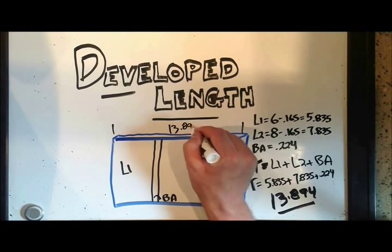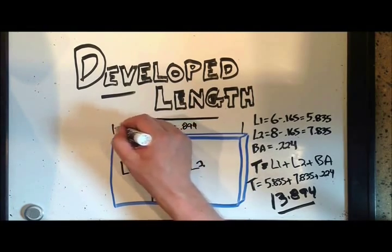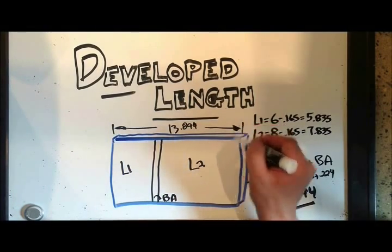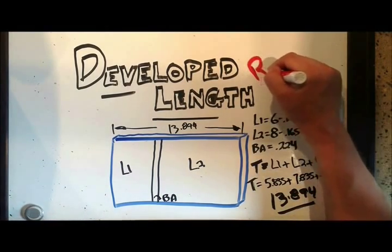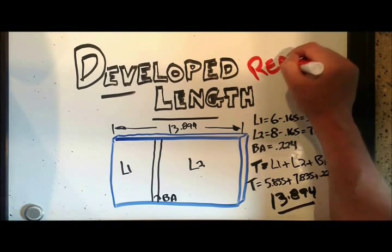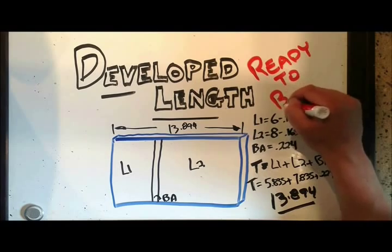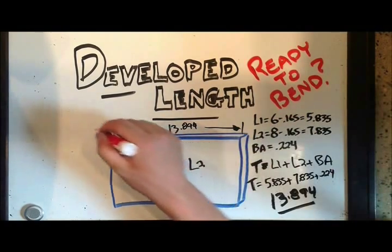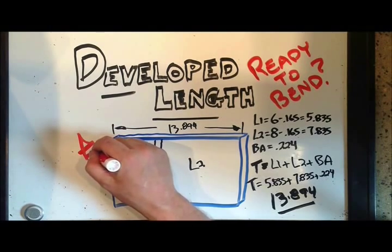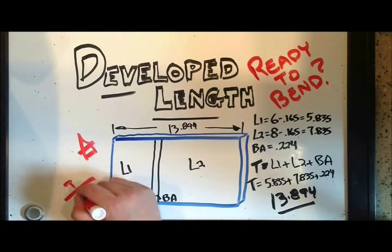We didn't have to use the whole 14 inches. And with that length, when we cut it exactly to 13.894, when we put it in the bending break and bend it, we'll end up with exactly a leg six inches long and a leg that's eight inches long. Are we ready to start bending? We don't know. I think there's a few more things that we might have to do.